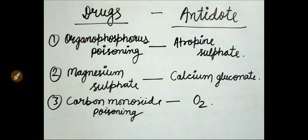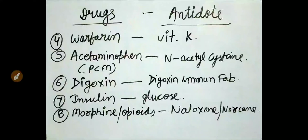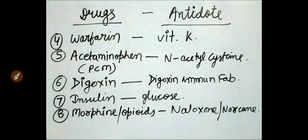Revise it with me. Organophosphorus poisoning — atropine sulfate. Magnesium sulfate — calcium gluconate. Carbon monoxide poisoning — oxygen. Warfarin — vitamin K. Acetaminophen or paracetamol — N-acetylcysteine. Digoxin — digoxin immune Fab.